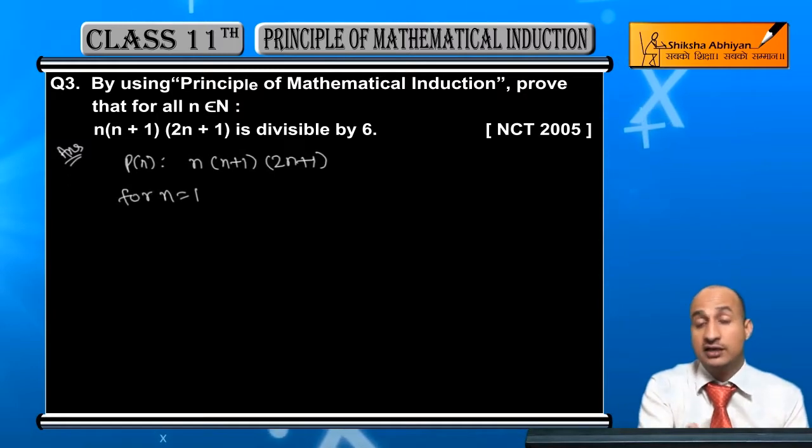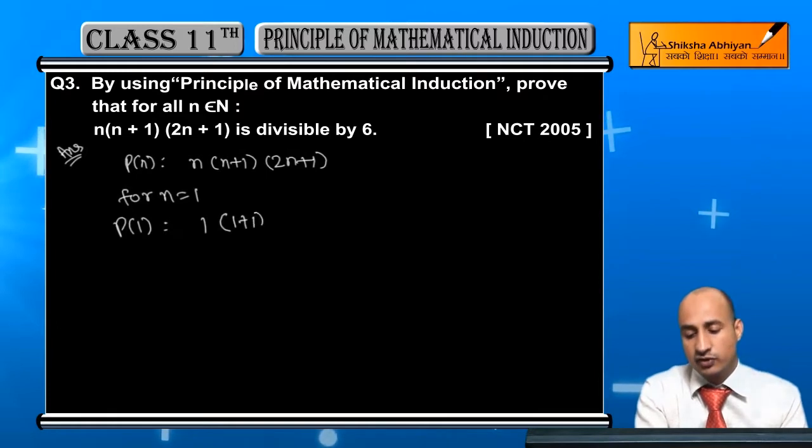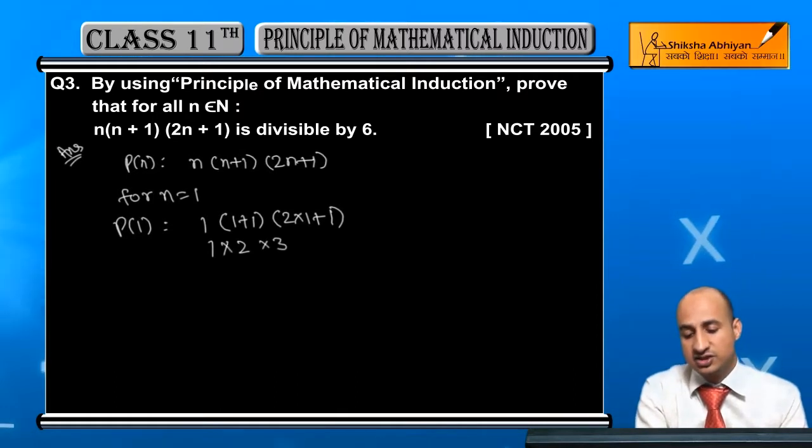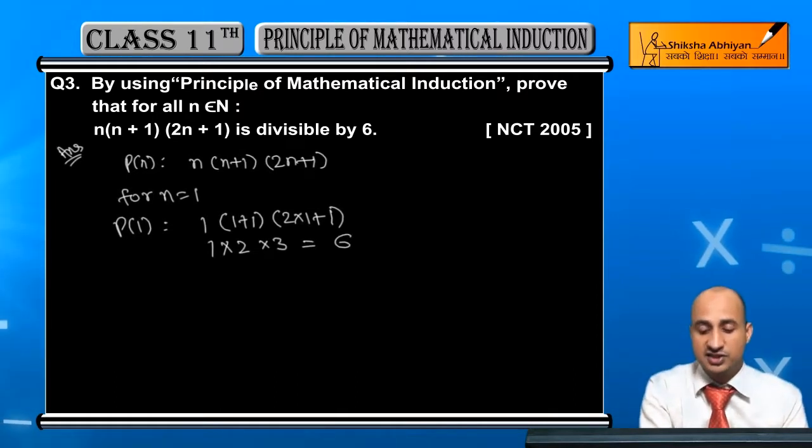So, for N equals 1, we will see. What is divisible by 6? See, 1 into N equals 1. Now, 1 plus 1 into 2 into 1 plus 1. This will become 1 into 2 into 2 into 1 plus 1 is 3. So, this is 3 equals 6. So, it is divisible by 6.